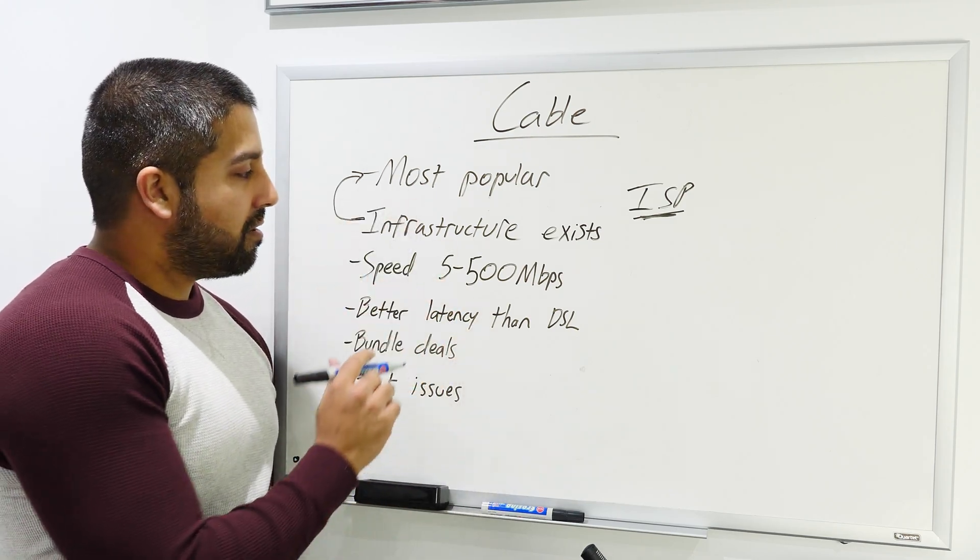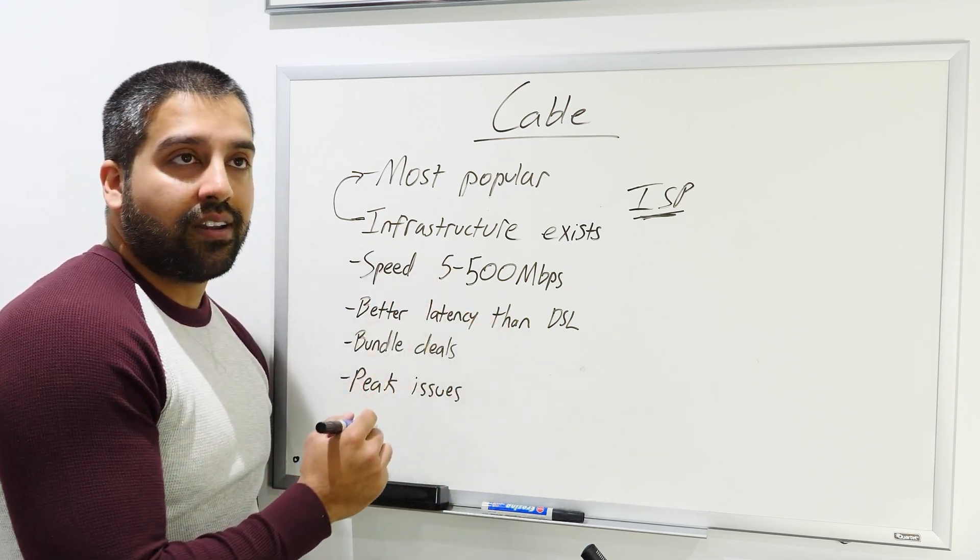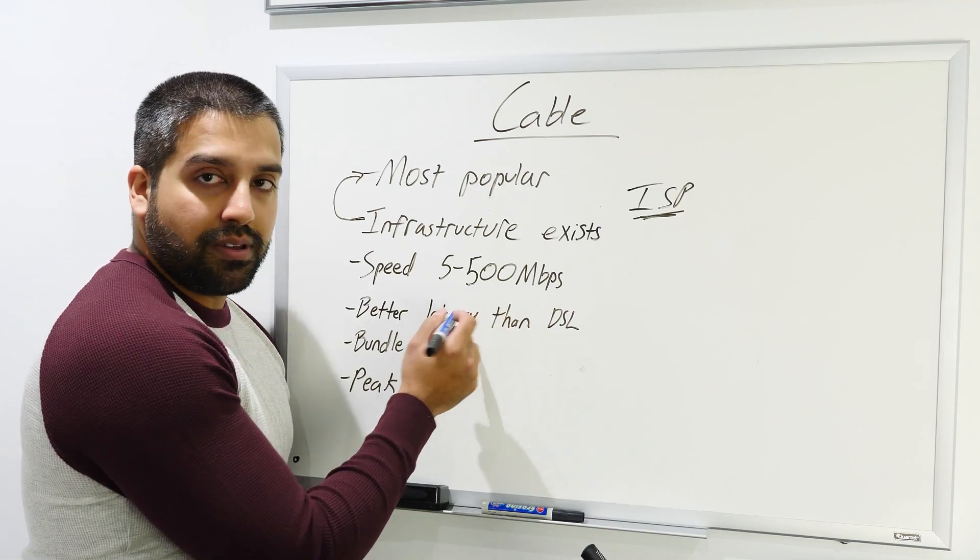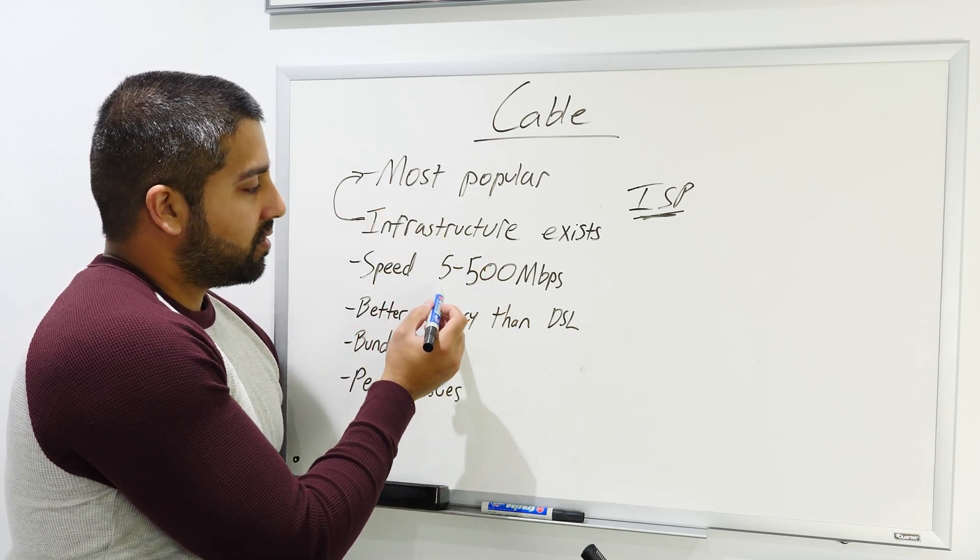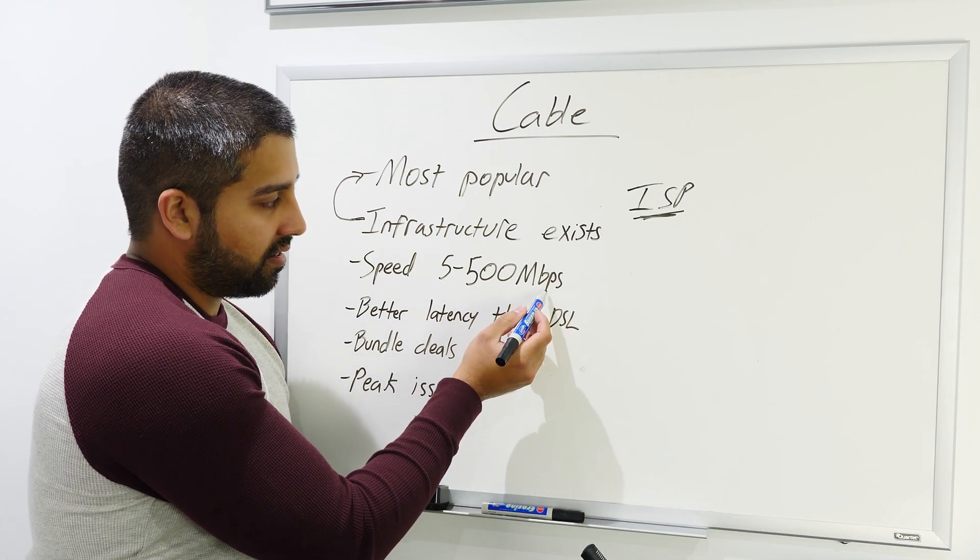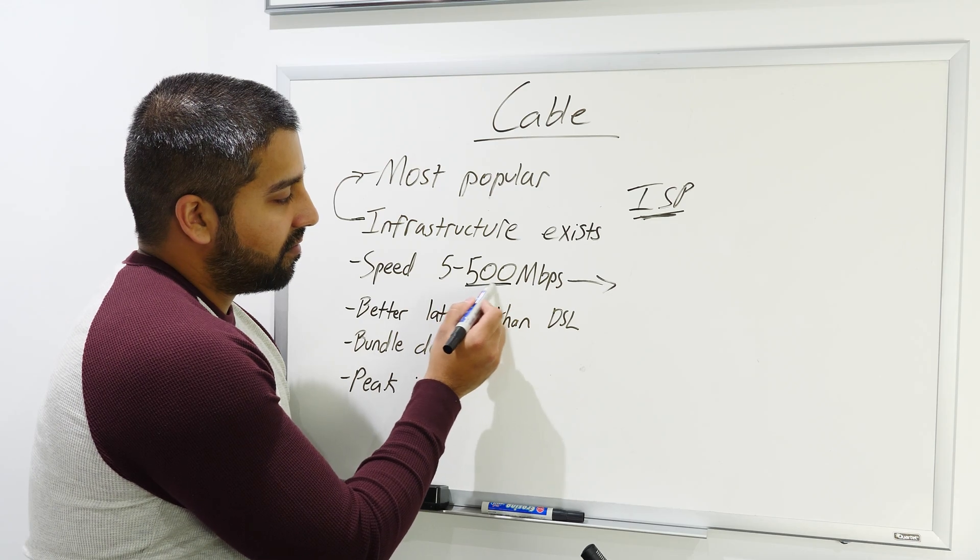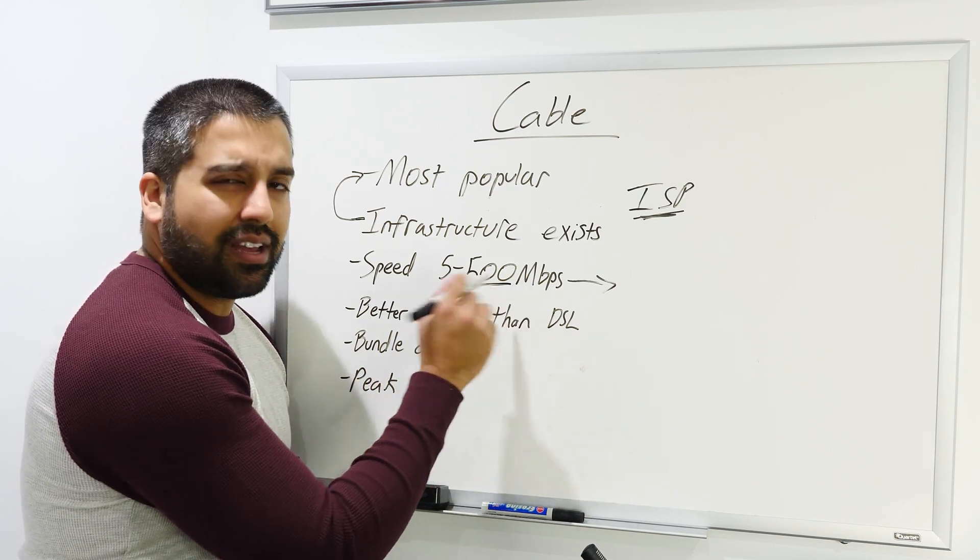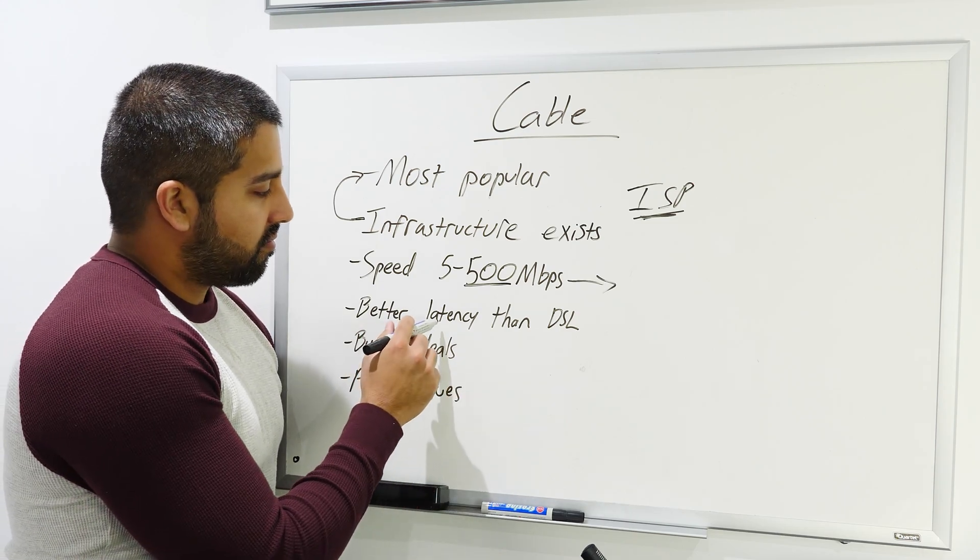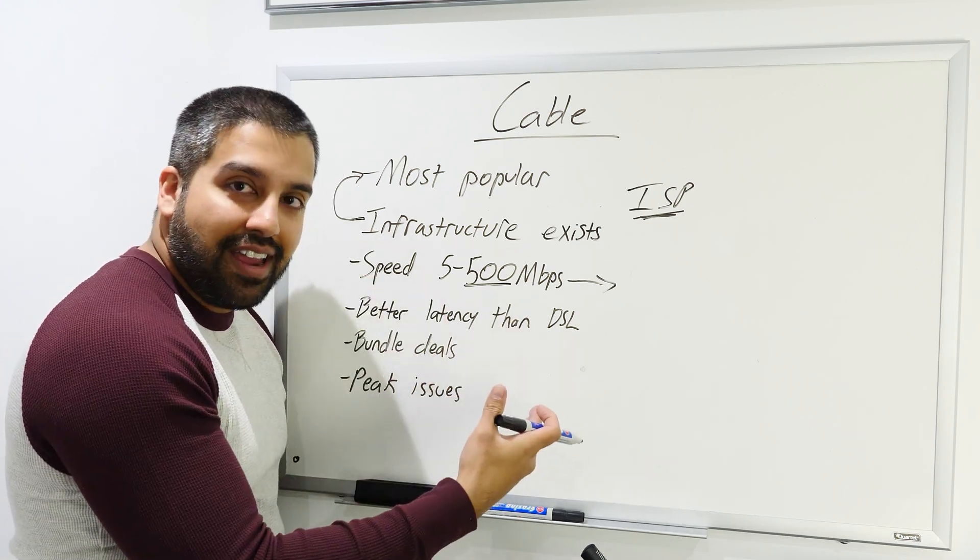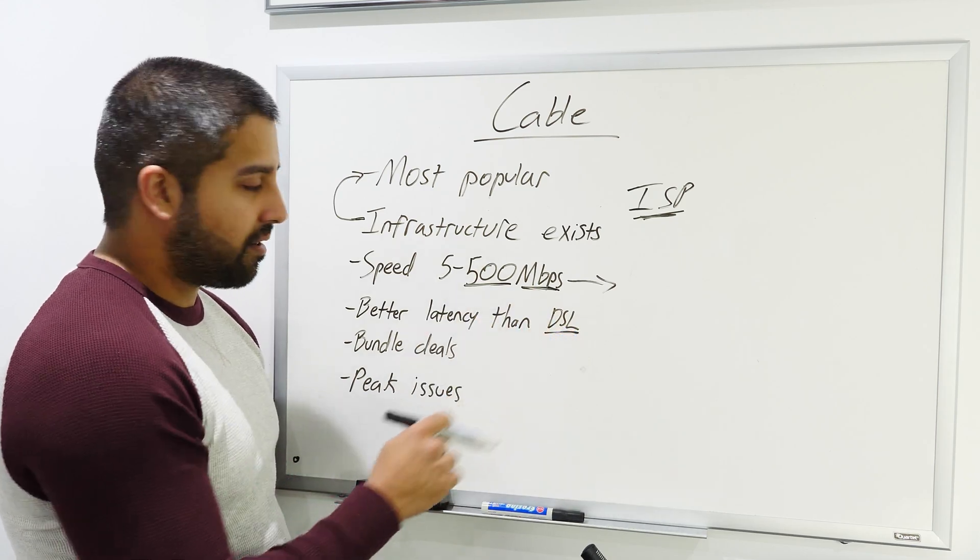When it comes to speeds for cable internet, any brackets I show you is the most common speed range. Cable speeds can be between 5 megabits per second and 500 megabits per second. I explain how internet speeds are understood in another video. This does not mean you can download a 500 megabyte file in one second, that's wrong. It also has better latency than DSL. Latency is not the same as speed, completely different.